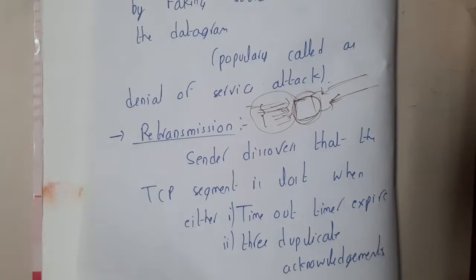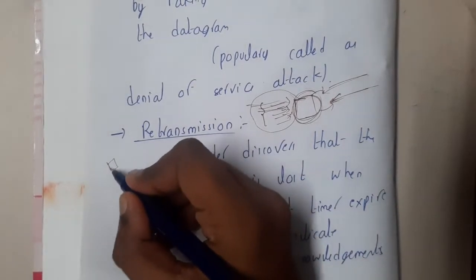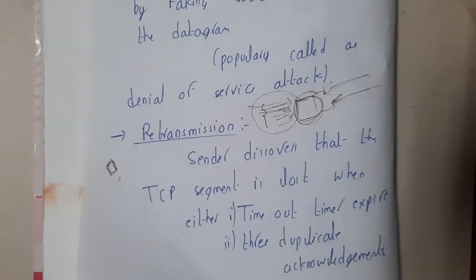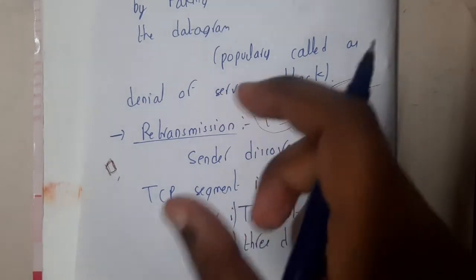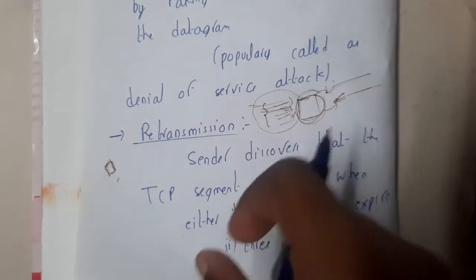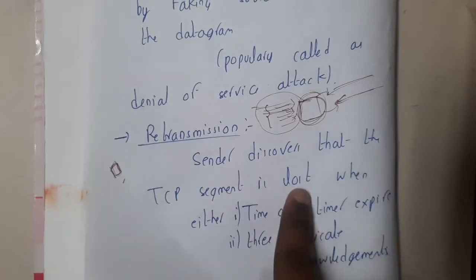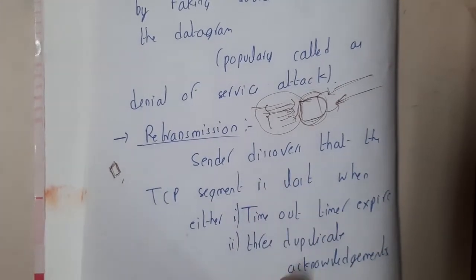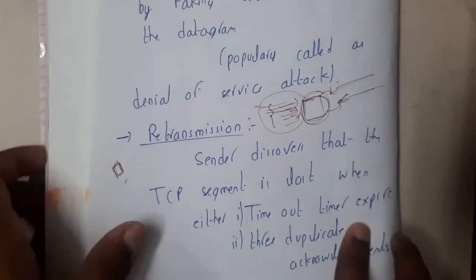The concept of retransmission applies whenever a particular segment or datagram is lost during transfer — we resend it. Retransmission occurs in two different ways: the first case is a timeout timer, and the second case is three duplicate acknowledgements.